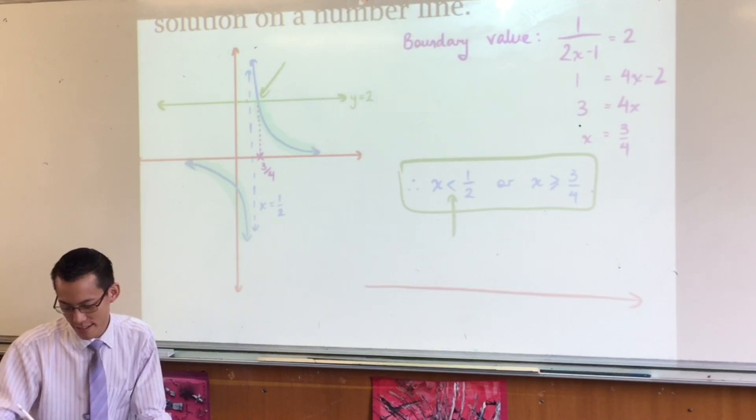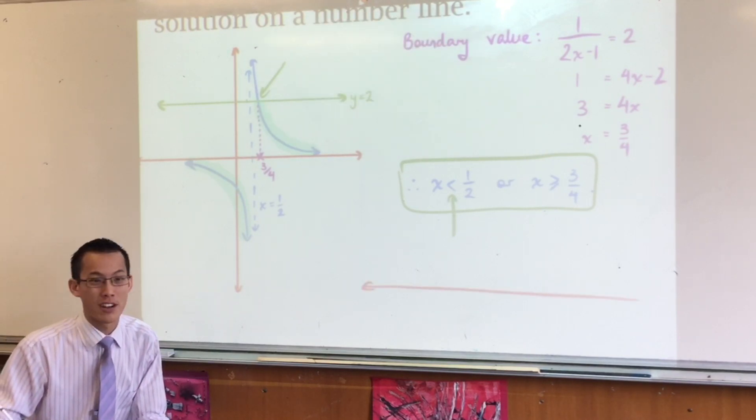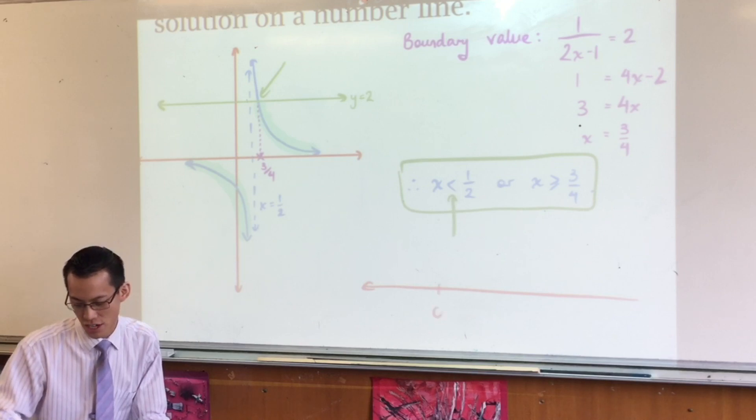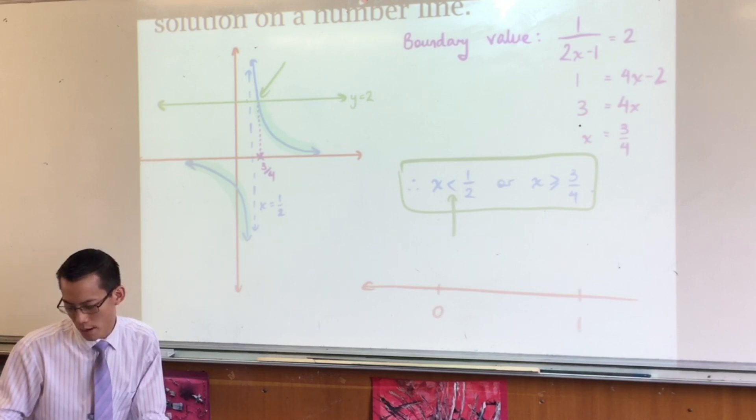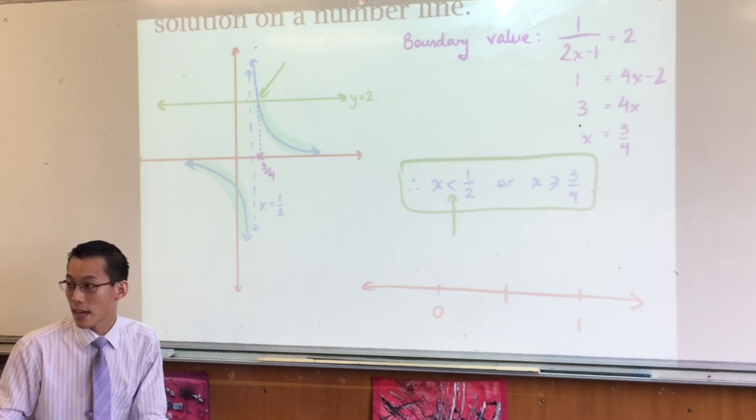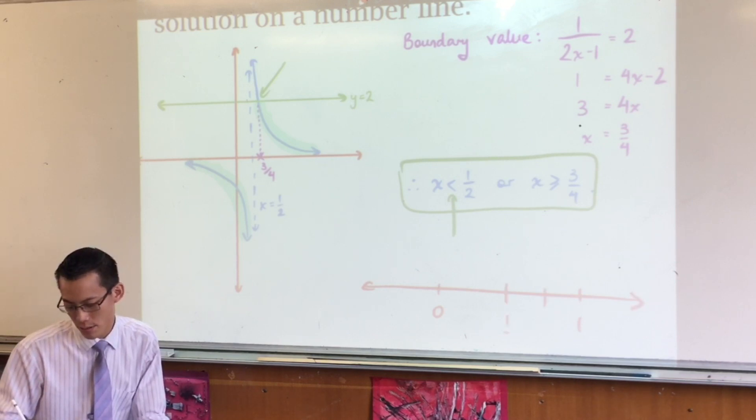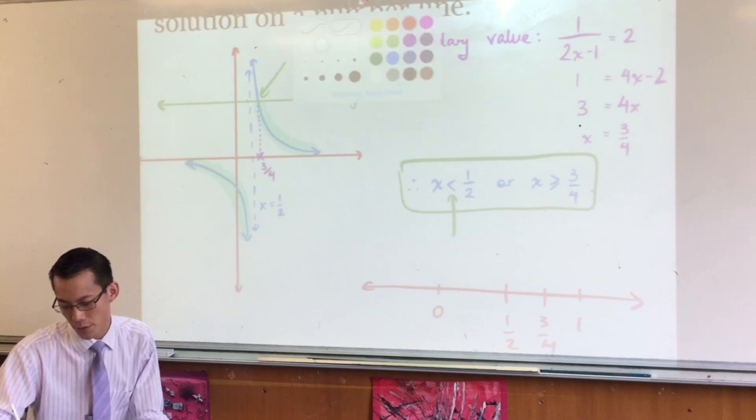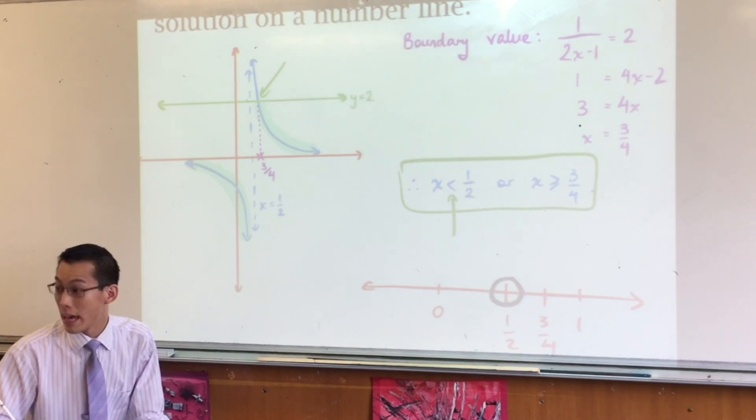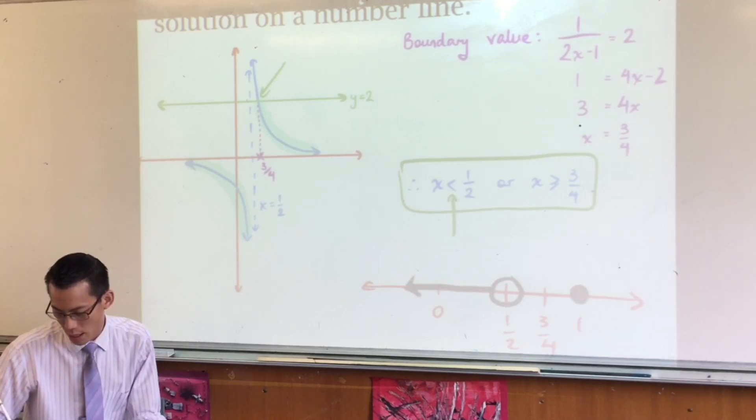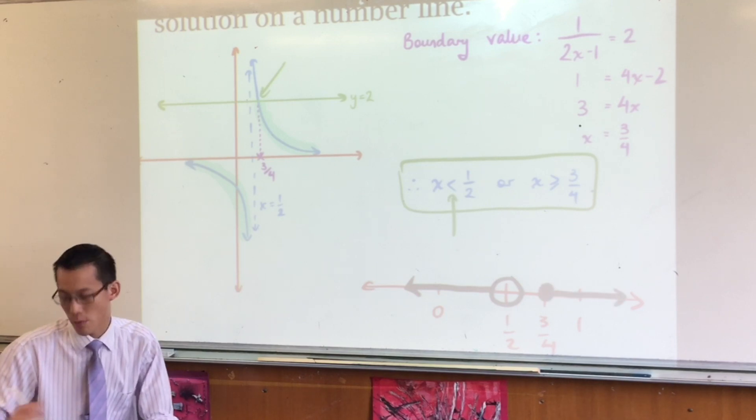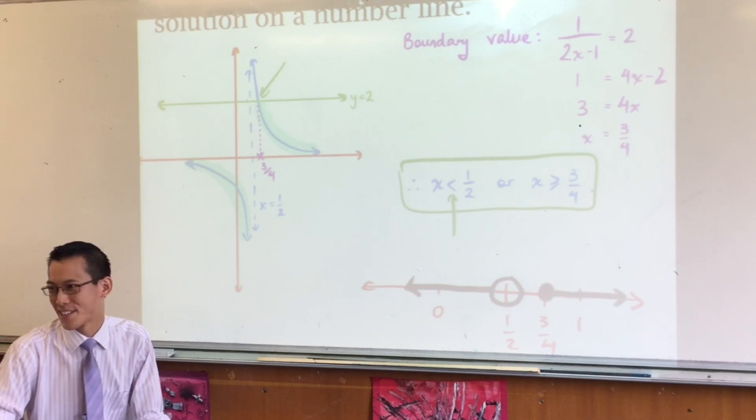So let's just quickly plot that, shall we? What's the most important number on the number line? Zero. So I'm going to put that in. It is important you have a decent scale. So if I put one there, half is exactly halfway. There's three quarters. And now, that means I've got a hollow circle there, to the left. And then I've got a filled circle here, to the right. Are you happy? That's a better solution.